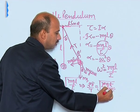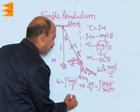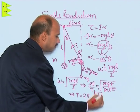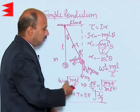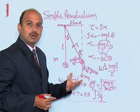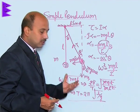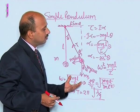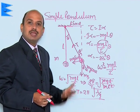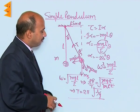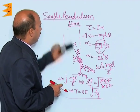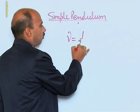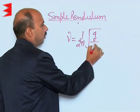So one L remains. We can write T is equal to 2 pi times the square root of L upon g, where L is the length of the pendulum and g is acceleration due to gravity. So we get the formula for the time period using the concept of angular simple harmonic motion. We can also get this result using the concept of linear simple harmonic motion. If you have the time period, you can also calculate the frequency: nu is equal to 1 upon 2 pi times the square root of g upon L.